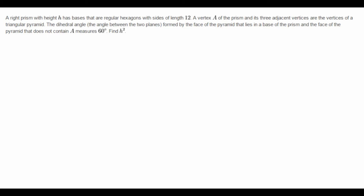So let's first read the problem. A right prism with height H has bases that are regular hexagons with a side length of 12, and we want to take a vertex A and its three adjacent vertices to make a triangular pyramid. We want to find the dihedral angle — the angle between the two planes formed by the face of the pyramid that lies on the base of the prism and the face that does not contain A. This angle is 60 degrees, and we have to find H squared.